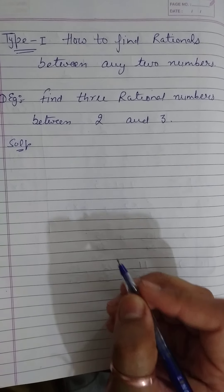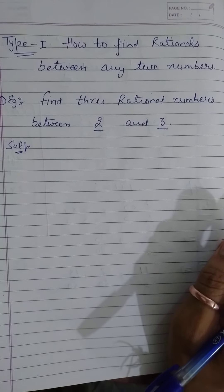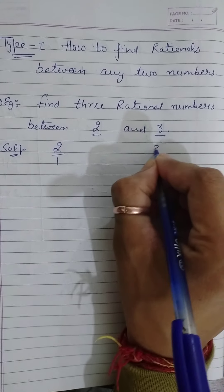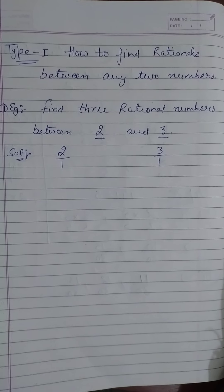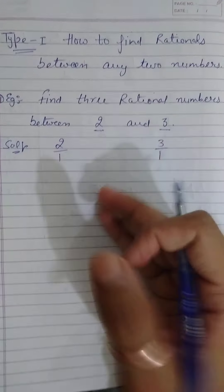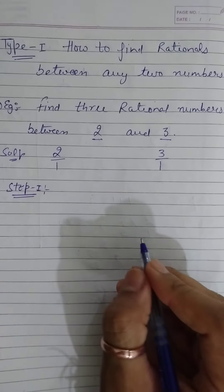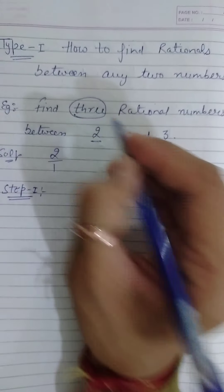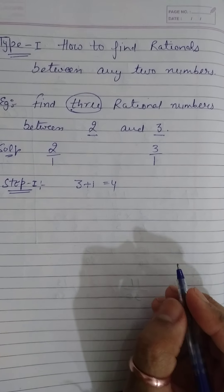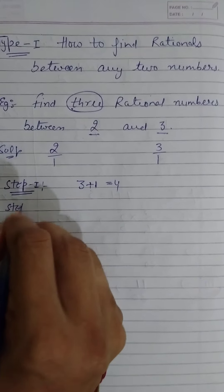The first thing we have to do is check the two numbers — we have to check whether the denominator is the same or not. If the denominator is the same, then Step 1: which number do you have to find? That is three, so 3 plus 1 is equal to 4. That is Step 1. Clear?